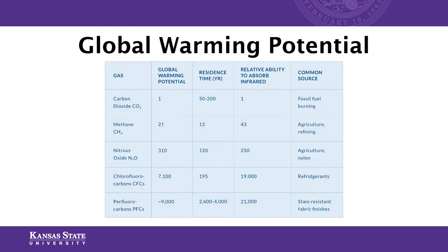This table shows the primary greenhouse gases divided by type with their global warming potential, all measured in relation to carbon dioxide. Nitrous oxide is very potent; however, we do not release nearly as much nitrous oxide into the atmosphere as carbon dioxide or methane, which is why we talk about it less. If anything is unclear about global warming potential, feel free to reach out.